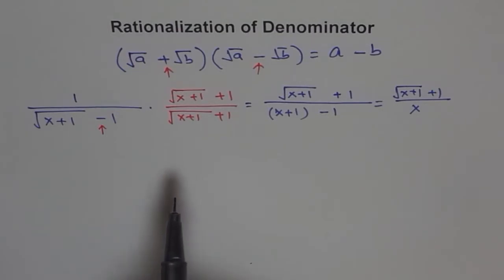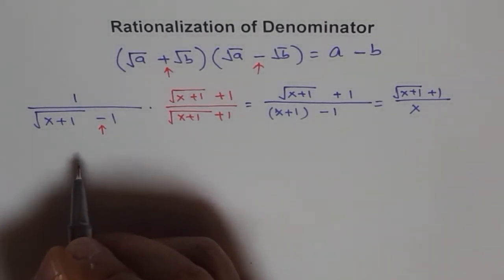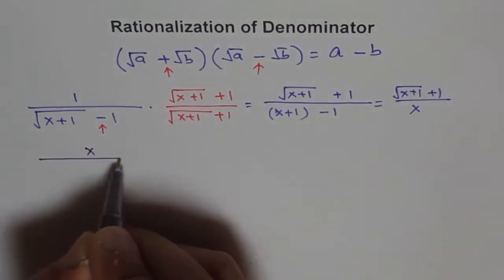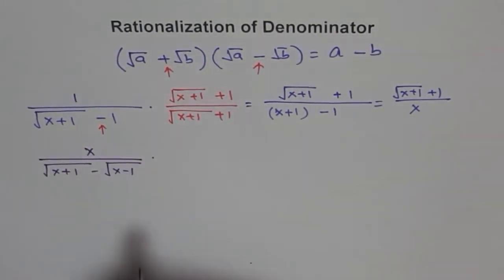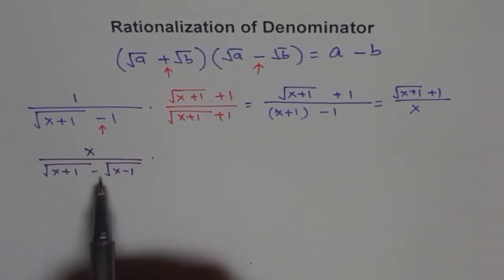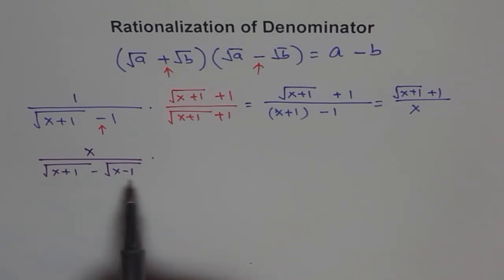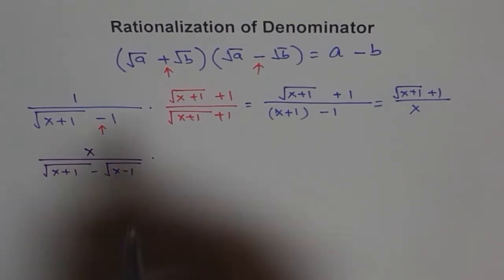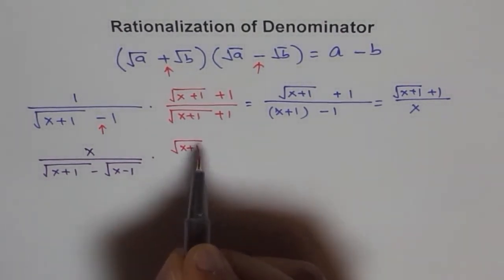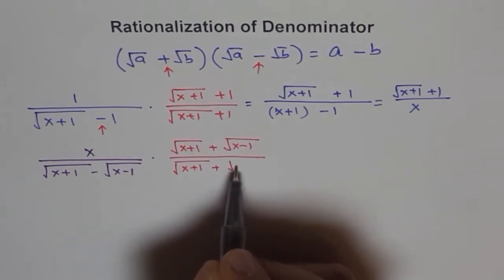Let me give one or two more examples of rationalization of the denominator. Consider x over square root of x plus 1 minus square root of x minus 1. To rationalize, you multiply and divide by the conjugate, which is square root of x plus 1 plus square root of x minus 1, divided by the same.